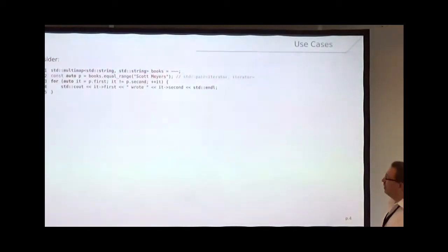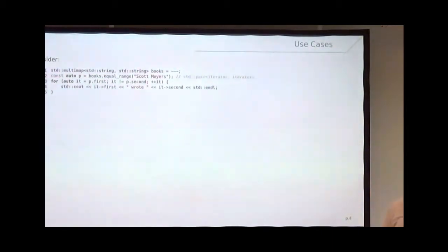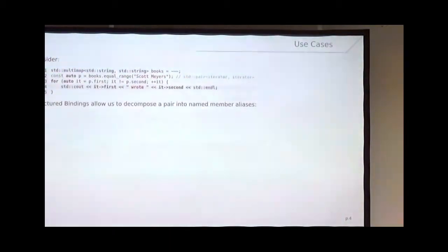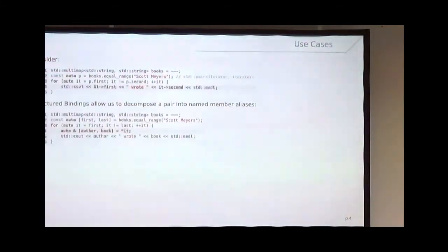Consider this small example where we have a multimap of books — a mapping from author to books, so one author can write multiple books — and we want to output all the books that Scott Meyers wrote. We use equal_range, get a pair of iterators back, and iterate over it. As you can see, for the value you need to say .second and for the key you need to say .first — not a nice API. With structured bindings, we can decompose the pair into named member aliases. Instead of the pair, we have first and last as the iterator range names, and inside the loop we decompose the value type of the map into author and book — our domain words — and then say 'author wrote book.'